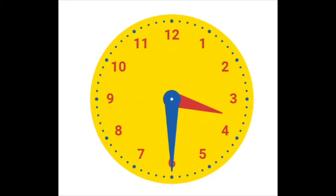Show students a model of an analog clock with the minute and hour hands. Point to the hour hand and tell students: the hour hand is the shorter hand. The hour hand points to the hour and moves slower than the minute hand. One full rotation of the hour hand represents 12 hours. Two full rotations of the hour hand is one day, or 24 hours. Move the hour hand between the 3 and the 4. Ask students: if the hour hand is between the 3 and the 4, what does that mean? Because the hour hand is between the 3 and the 4, the time starts with 3.